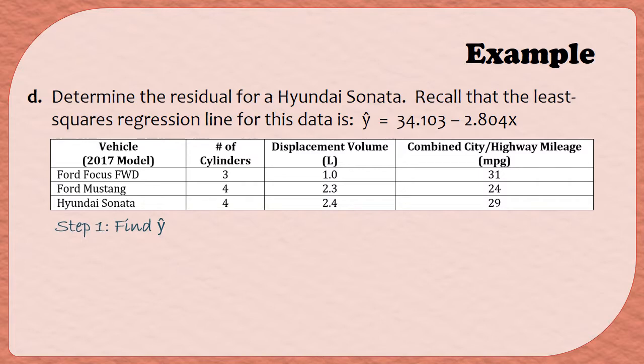In order to find y hat, you have to know an x value. So the Hyundai Sonata has a displacement volume of 2.4 liters, meaning the Hyundai Sonata has an x value of 2.4. So to find y hat, I'm going to substitute 2.4 into the least squares regression line.